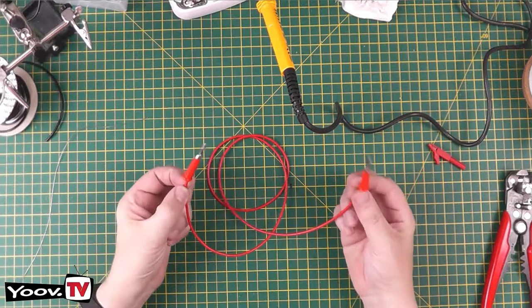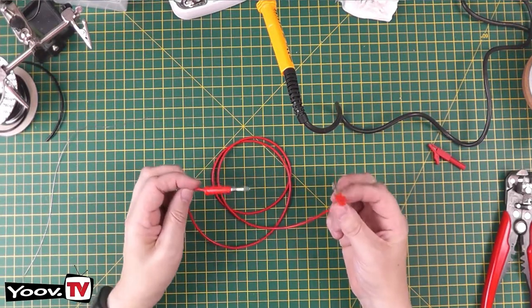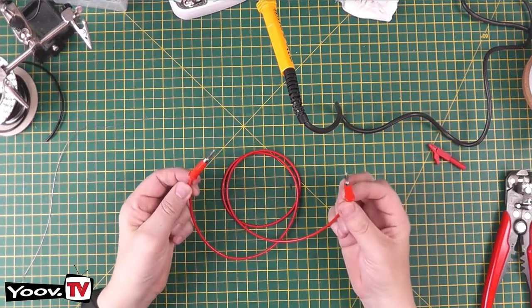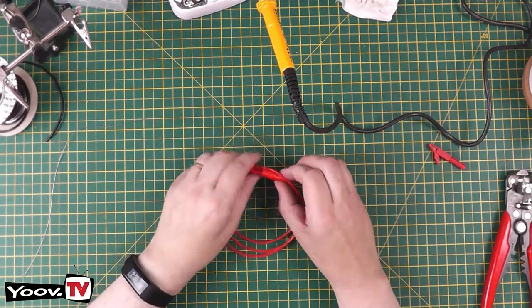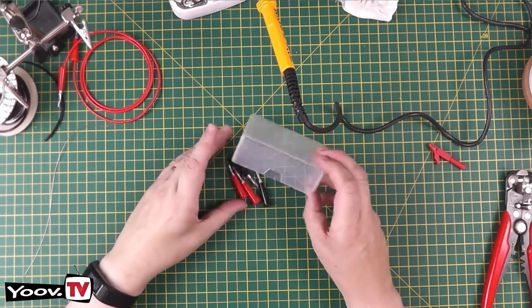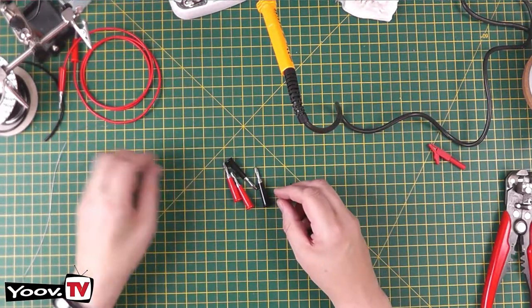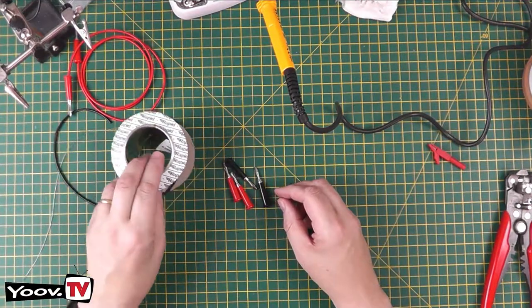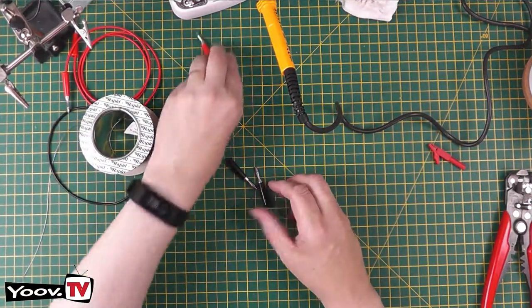So as well as making the standard one meter I'm going to make some shorter ones today just to show you the process. So first of all we need two things we need banana plugs and we need cable. So let's look at the banana plugs first.